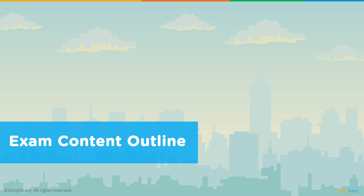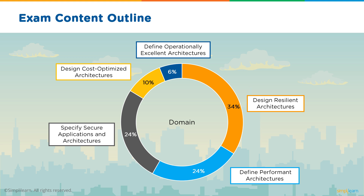Now let's look at an outline of the exam content. The exam has five major domains with respective weightages: designing resilient architectures at 34%, defining performant architectures at 24%, specifying secure applications and architectures at 24%, designing cost-optimized architectures at 10%, and defining operationally excellent architectures at 6%.